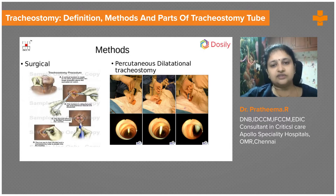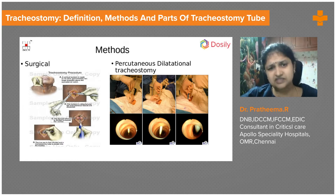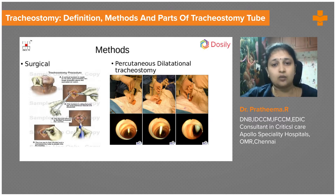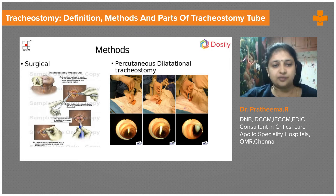Surgical and percutaneous dilatational tracheostomy are two different techniques. In surgical tracheostomy, there is cutting and retracting of muscles. In bedside percutaneous dilatational tracheostomy, under bronchoscopic guidance, we use a needle and wire technique. It is mostly dilatational — we don't cut the muscles. Instead, we use dilators to sequentially dilate the trachea and then pass in the tracheostomy tube.